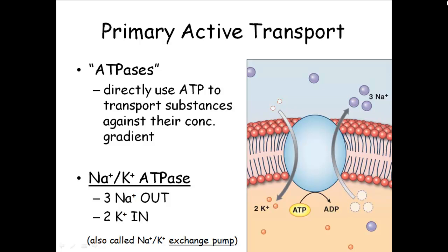If I'm pumping three positive things out and only two positive things in, the outside of my cell membrane is going to be a little bit more positive compared to the inside. I'm putting more positives out than I'm bringing in, so the outside of my cell membrane is a little bit more positive compared to the inside. That is a critical thing you need to understand — we're going to come back to this fact time and time again.